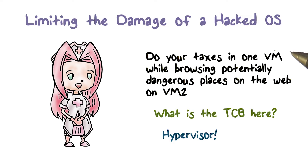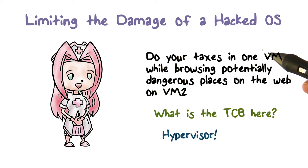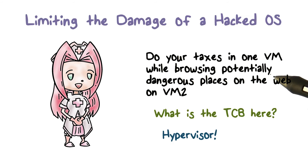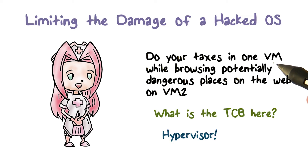What we really have is isolation between virtual machines. Earlier we had isolation between processes or applications, and they all shared the same operating system. Now we have isolation between different virtual machines, each with its own guest operating system. So I can do my taxes in one virtual machine while browsing potentially dangerous places on the web in a different virtual machine. Anything bad that happens in the second virtual machine should not affect your tax work in the first.